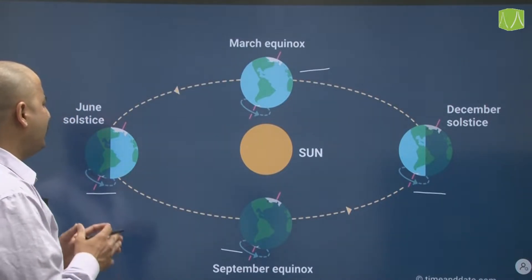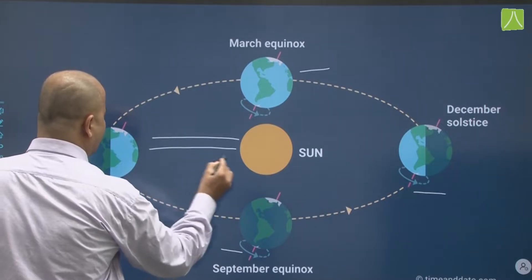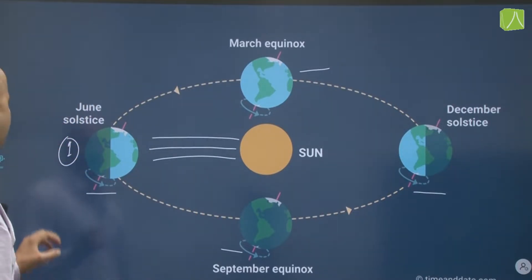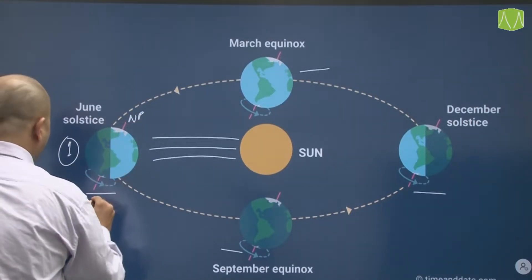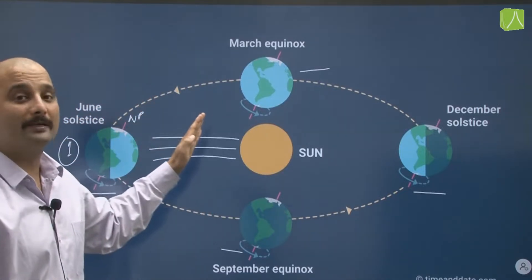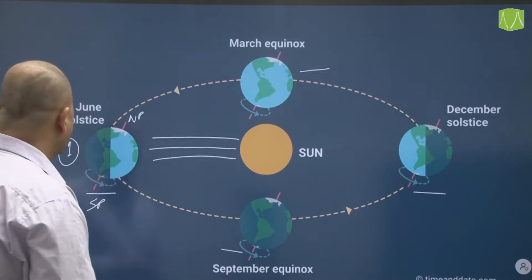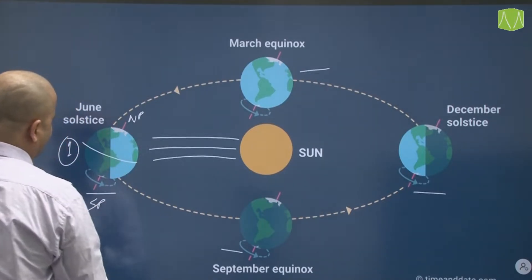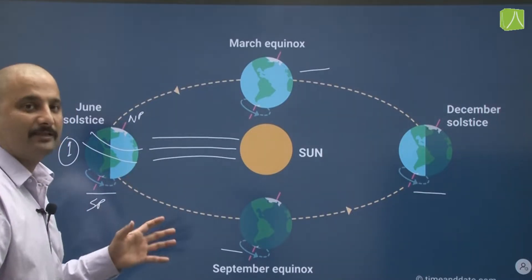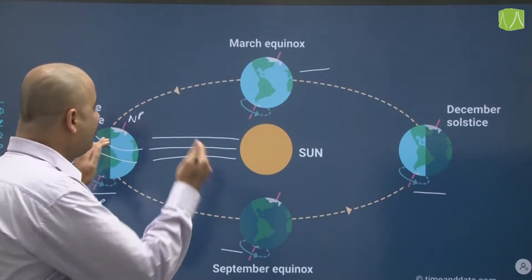This is the most interesting portion. When the earth is in the first position, you can see the north pole and south pole. The north pole here is facing towards the sun, whereas the south pole is facing away from the sun. This is the equator, and the tropic of cancer, which is in the northern hemisphere, is directly facing the sun.